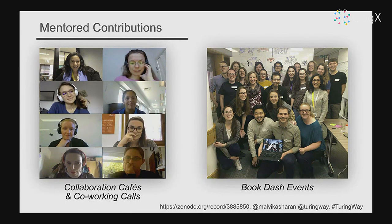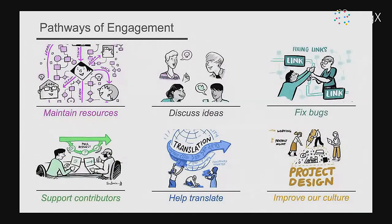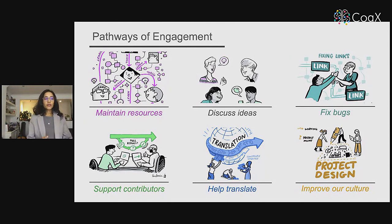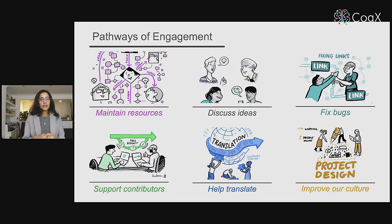We don't only talk the talk — we also walk the walk. We facilitate onboarding and offer ongoing support with mentored contributions. We host bi-monthly Collaboration Cafes, which are community working spaces for both new and past members — the next one is next week if you're interested. We also offer shorter co-working calls almost every day. In pre-pandemic times, we also hosted in-person Book Dash events — a day and a half sprint-like event where international participants came together to collaboratively improve the content in the Turing Way. Community members can engage by maintaining resources, supporting contributors in their own network, helping to translate resources into different languages, and fixing small errors.